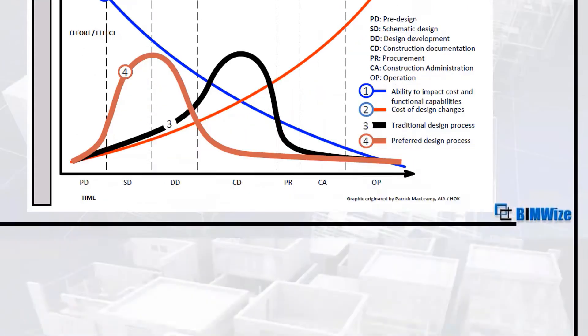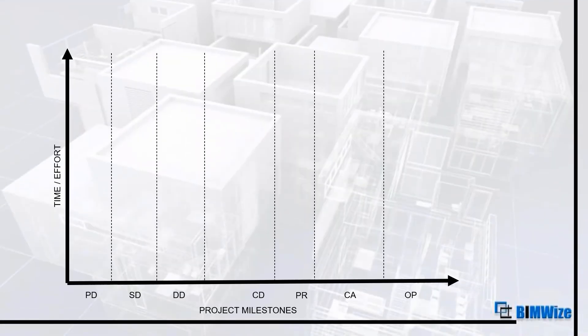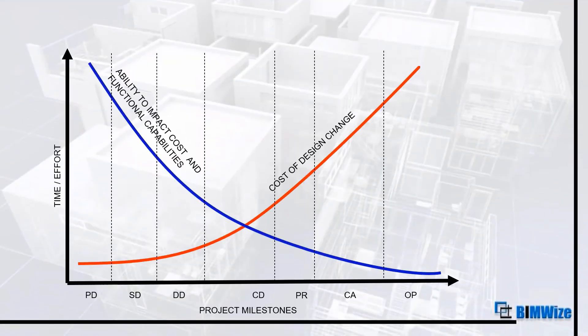Let's look at this graph in detail. At the start of a project, the ability to change the design and affect its functional capabilities is really high. But as we move forward through different stages, that ability becomes less and less, and we really cannot think about making significant changes at the construction documents stage or, of course, at the operations stage.